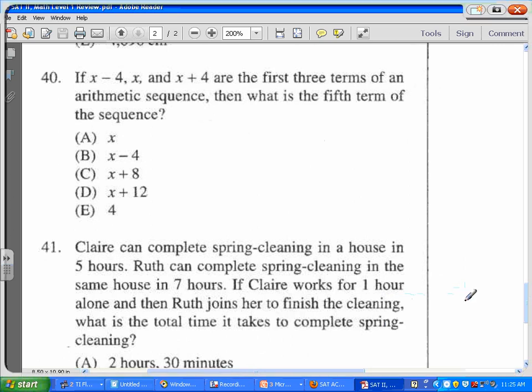Okay, so on number 40, you have an arithmetic sequence, and the first term is x minus 4, the second one is x, the next one is x plus 4. Those are the first three terms, and we want the fifth term.